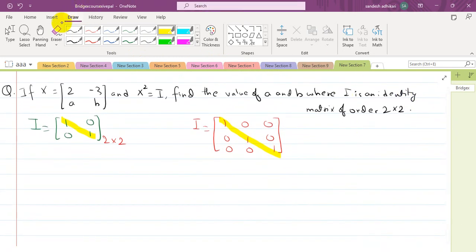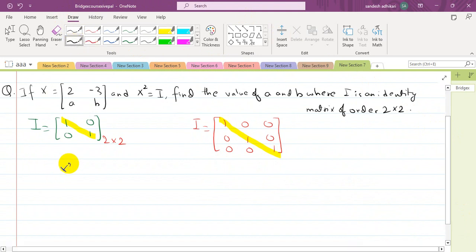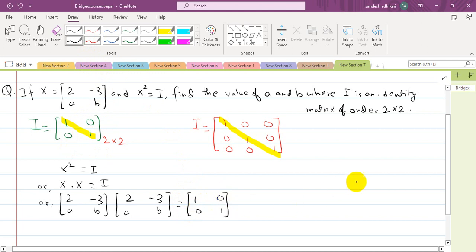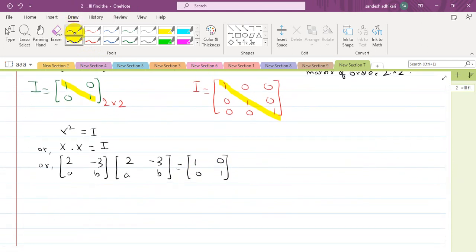Now, x² equals I means x·x equals I. In matrix form, this is [2, -3; a, b] times [2, -3; a, b] equals [1, 0; 0, 1]. For matrix multiplication, we multiply the first row by the first column, then that row by the other column, and so on.